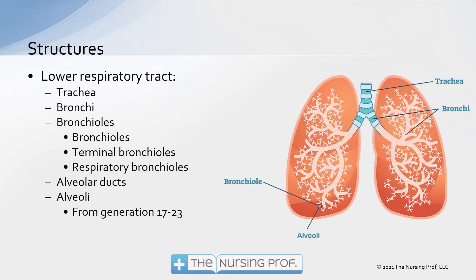Moving into the lower respiratory tract, now we have the trachea, which is going to be branching into the bronchi. The bronchi move out into smaller bronchioles. The bronchioles have three different branches. We have the main bronchioles coming off of the bronchi, so we have those two big bronchi coming down, the right and the left, and then those are going to branch off into those smaller bronchioles.